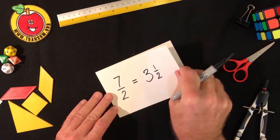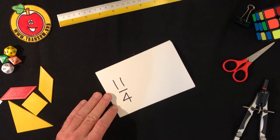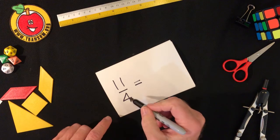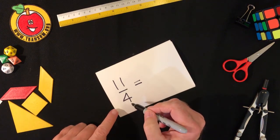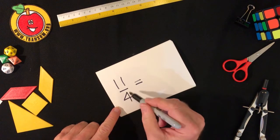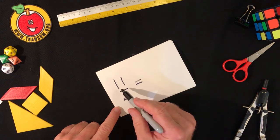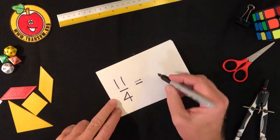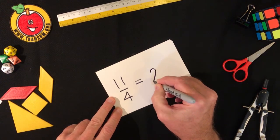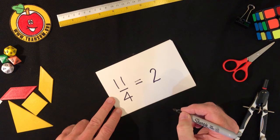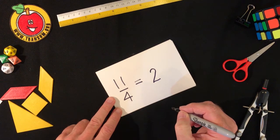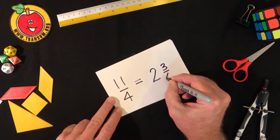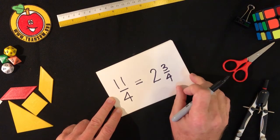Okay let's try another one. This time we have eleven quarters. So how many whole ones do we have? Well four quarters make a whole one so we need to know how many fours there are in eleven. Well there are two fours in eleven because two fours make eight and there are three left over. So the answer is two and three quarters.